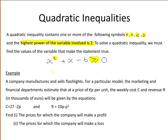When solving quadratic inequalities, you should write them in this general format with the variable squared term first, followed by the variable term and the constant term, leaving zero at the right-hand side of the inequality statement. This allows you to solve the inequality easily.